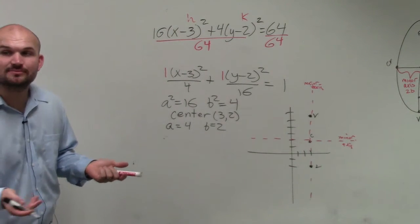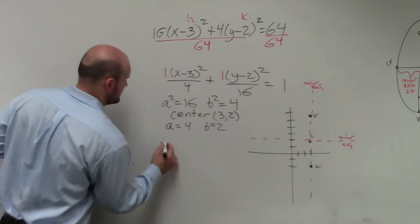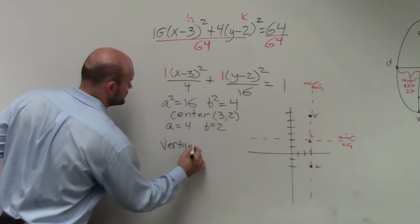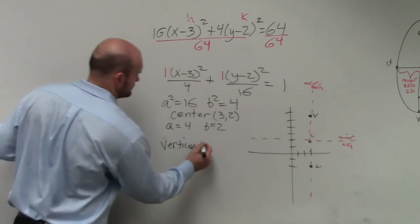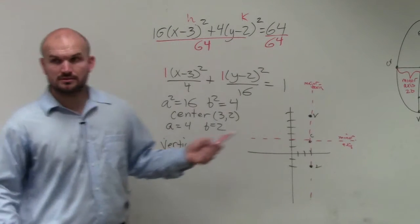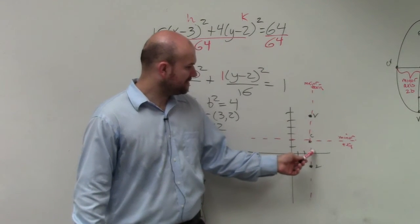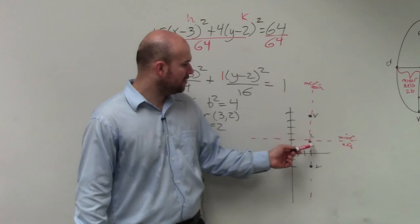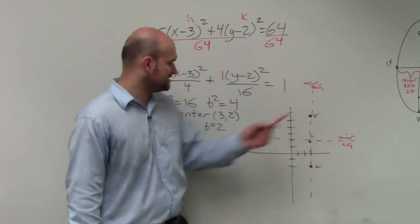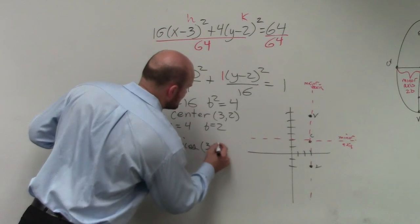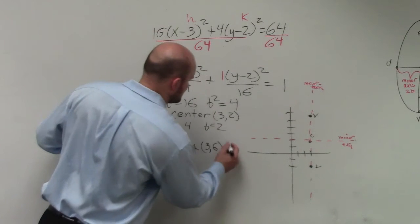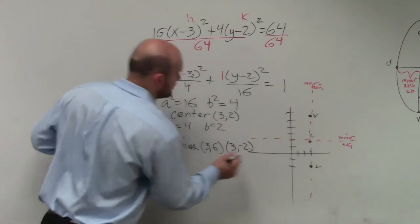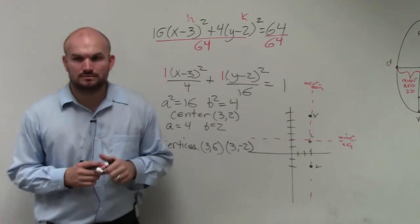Now I simply need to label those points. So let's find out what these points are. That's 3, 4, 5, 6. So I have 3 comma 6 and 3 comma negative 2.